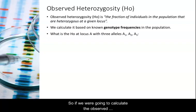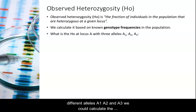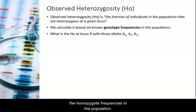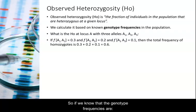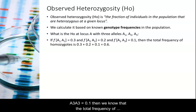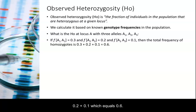So if we were going to calculate the observed heterozygosity in a population at locus A that had three different alleles — A1, A2, and A3 — we could calculate the observed heterozygosity based on what we know about the homozygote frequencies in the population. If the genotype frequencies are: A1A1 = 0.3, A2A2 = 0.2, and A3A3 = 0.3, then the total frequency of homozygotes is the sum of those: 0.3 plus 0.2 plus 0.1, which equals 0.6.